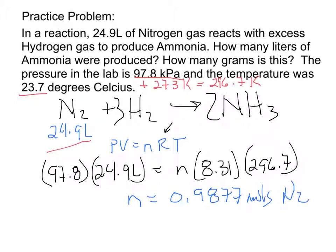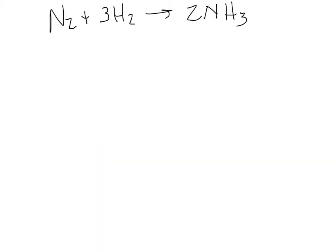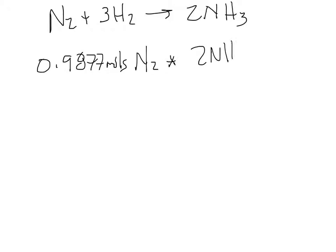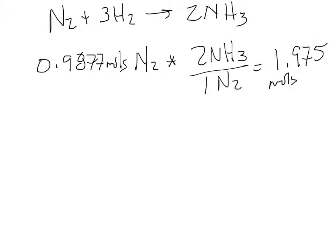Now that we have our moles of nitrogen gas, we go to the second step and turn it into moles of ammonia. We have 0.9877 moles of nitrogen gas, and we use our balanced chemical equation. Multiplying by the mole ratio from the balanced chemical equation, we see that we should end up with 1.975 moles of ammonia.